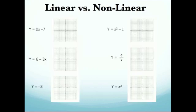Let's start by looking at the graphs that you have on your notes. We have six different equations. We have y equals 2x minus 7, y equals x squared minus 1, y equals 6 minus 3x, y equals 4 divided by x, y equals negative 3, and y equals x cubed.